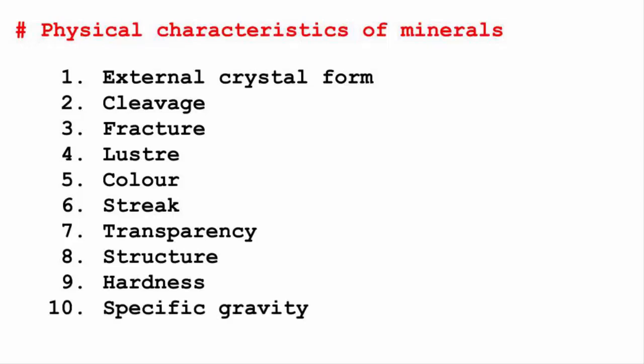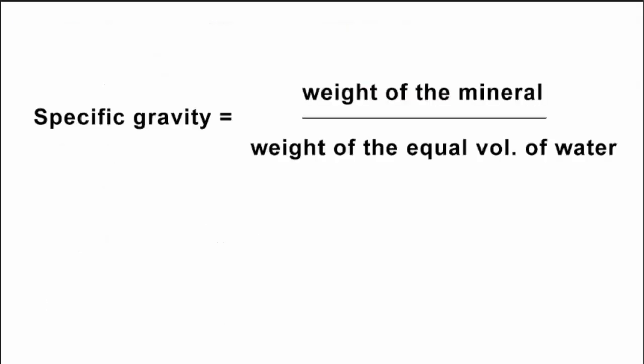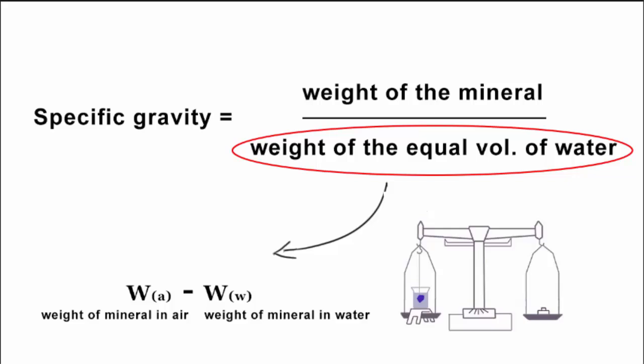The last property is specific gravity. Specific gravity of a mineral is a comparison or ratio of the weight of the mineral to the weight of an equal volume of water. The weight of the equal volume of water is found by finding the difference between the weight of the mineral in air and the weight of the mineral in water.